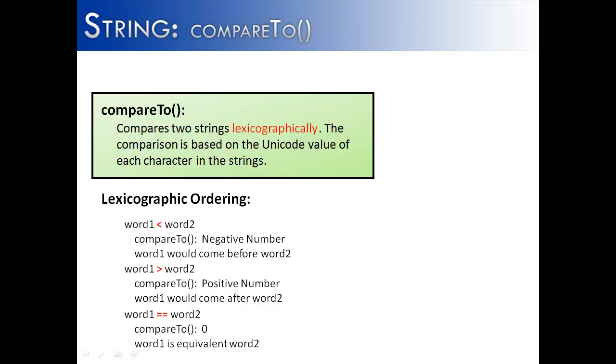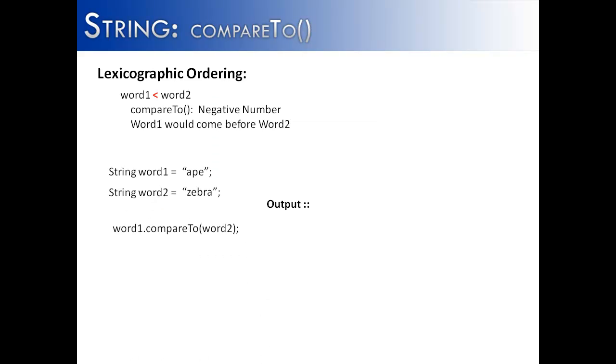Let's look at this a little bit more in depth. If we have the word ape and zebra and we say word one dot compare to word two, ape is less than zebra. So therefore, we're going to get a negative value. And where are we getting negative 25 from? Well, we're going to look at the first letters. The first letter is A and Z. Z is 25 letters away from A. And A comes 25 letters before Z. So therefore, you get a negative 25.